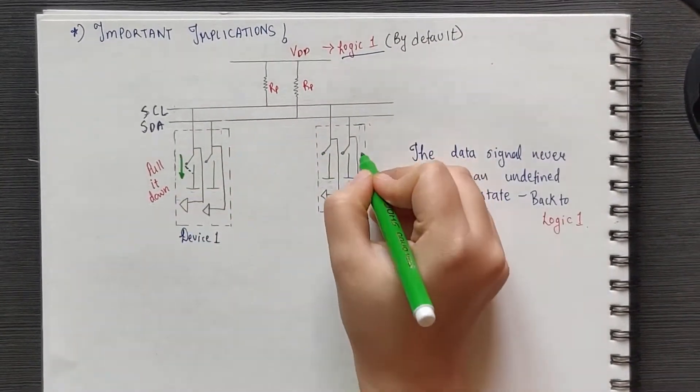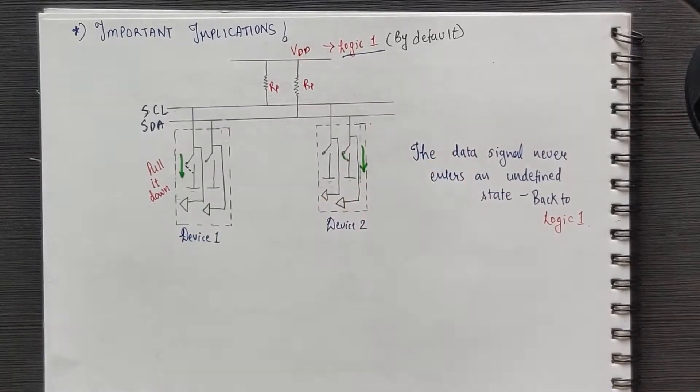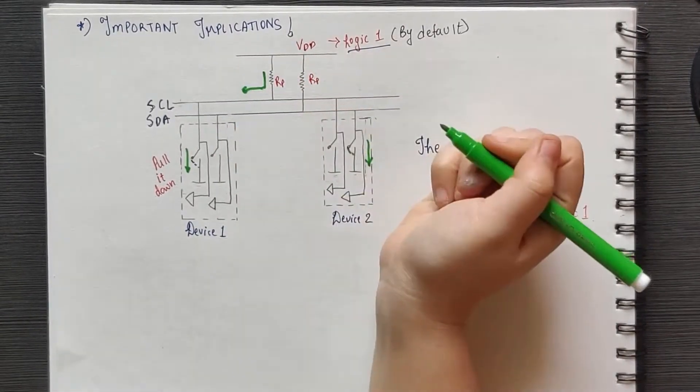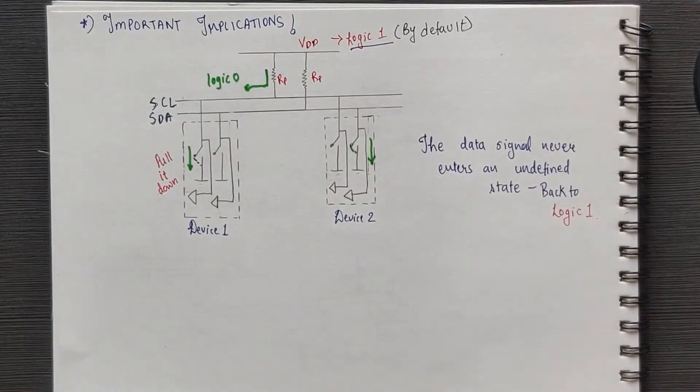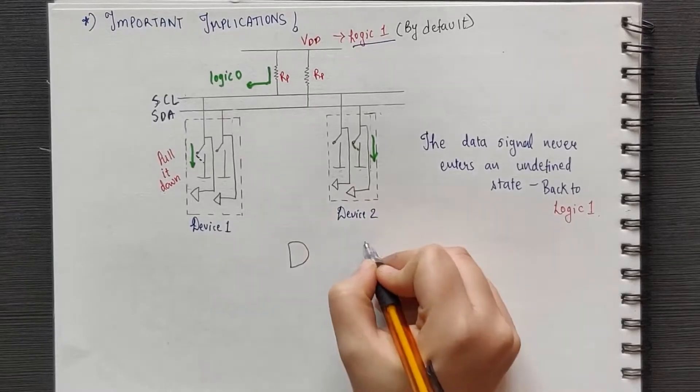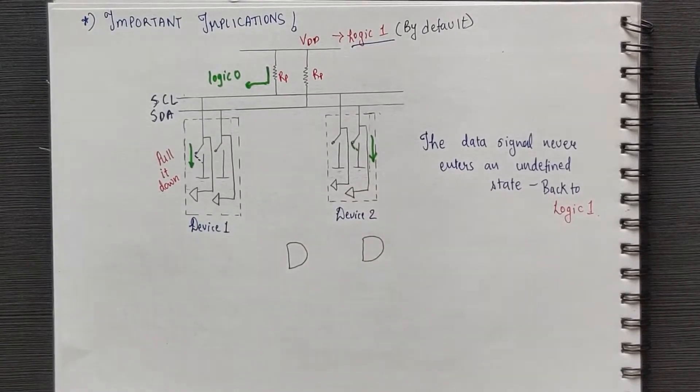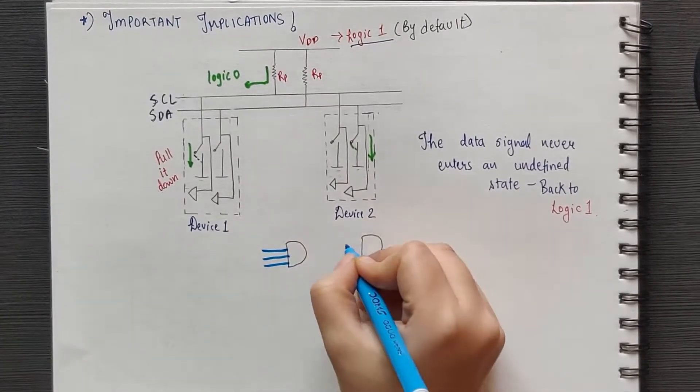Also, if a master device becomes non-functional during the middle of a transmission, then both the SDA and SCL return to logic high. Thus, the line is at logic 1 when none of the devices are trying to pull it low.